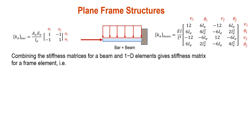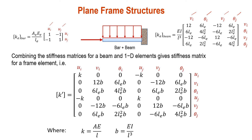In this case, we have K_bar, which starts from UI and UJ. And for K_beam, we have VI, theta_I, VJ, and theta_J. So the arrangement of the K_frame should start from UI, VI, theta_I — which are X, Y, and Z — representing deformation in the X direction, Y direction, and rotation in the Z direction. This is followed by the second node: UJ, VJ, and theta_J, as shown in this matrix.